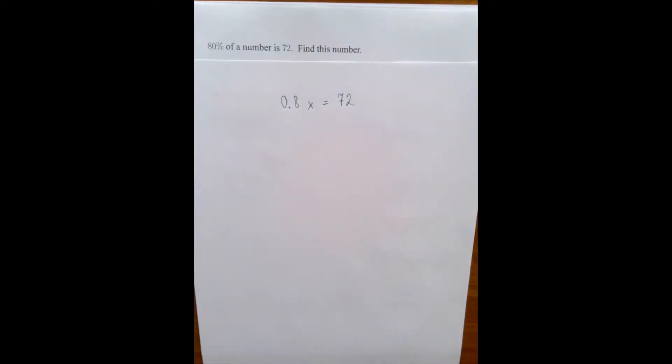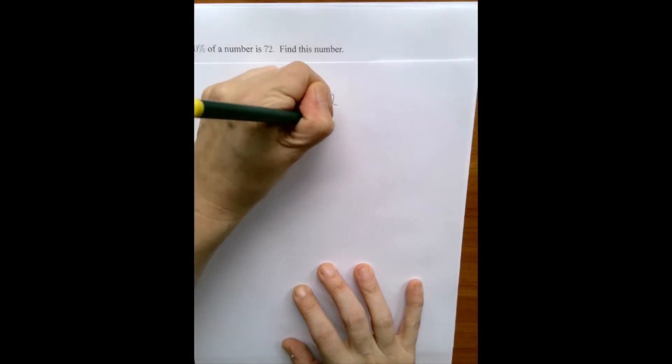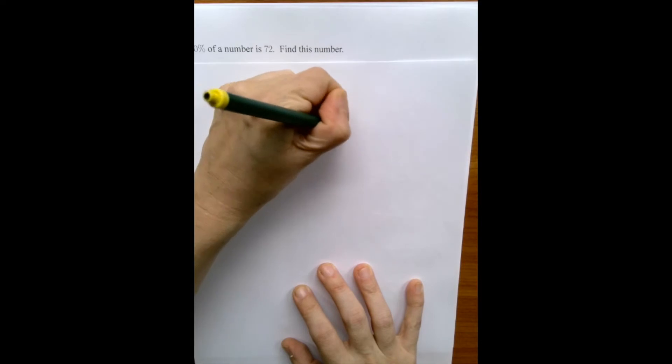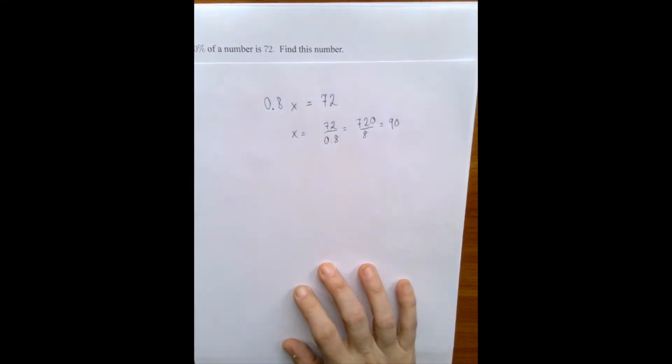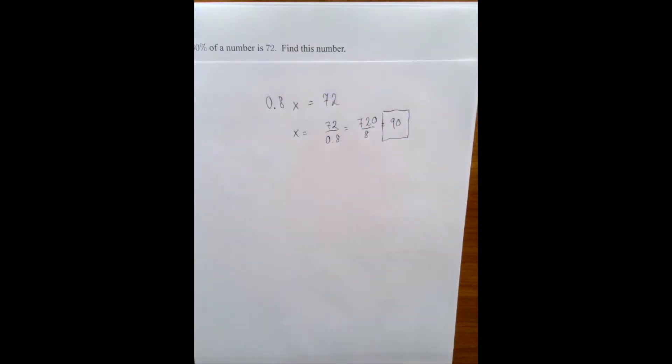Well, now it's a one-step equation, which we solve for x. And so the answer is 90. And we can check. If we take 80% of 90, that should be 72.